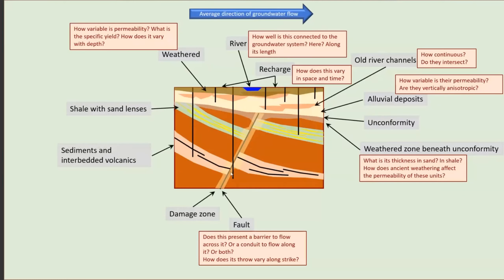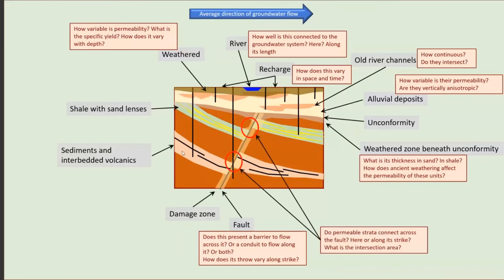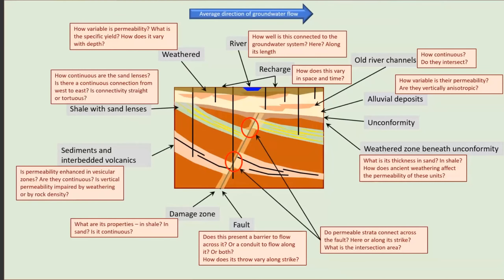The fault — does it offset or join permeable media? What about one kilometer down the strike? Can water flow up the fault or the damage zone, or does it present an obstacle to lateral movement of drawdown? The geological conceptual model tells us the detail is important, but the geologist cannot tell us the exact nature of that detail as it pertains to our area of investigation. The fact that detail is important, but the details of the detail are unknown, is one of the key reasons why there is so much uncertainty in groundwater modelling.